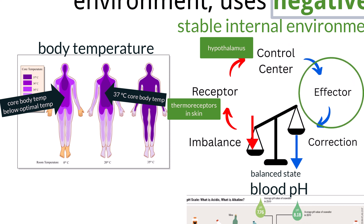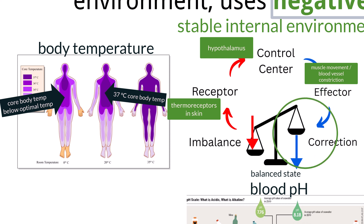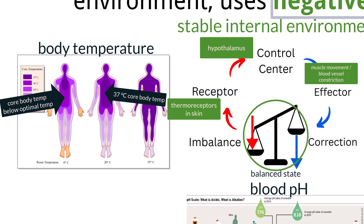The effector carries out the response directed by the control center to restore balance. For example, muscles may begin to shiver to generate heat, or blood vessels may constrict to reduce heat loss. The response of the effector reduces or reverses the original stimulus, bringing the internal condition back toward the set point. Once balance is restored, the response is reduced or stopped, completing the negative feedback loop.